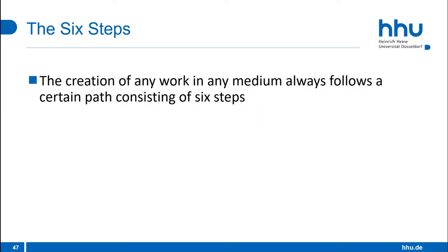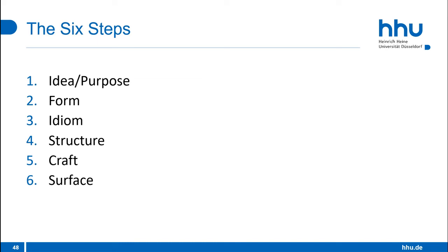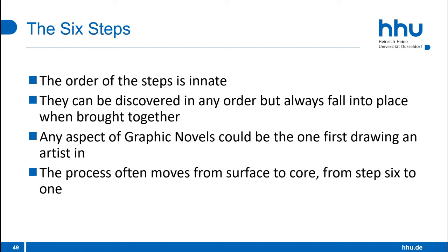The creation of any work in any medium always follows a certain path consisting of 6 steps. Step 1 is the idea or purpose — the work's content. Step 2 is the form the work will take, for example a book, a drawing or even a chair. Step 3 is the idiom — the genre the work belongs to and its vocabulary of styles, gestures or subject matter. Step 4 is the structure — what and how to put it together and arrange it, how to compose the work. Step 5 is the craft — constructing the work. And step 6 is the surface — the production values, finishing, the aspects most apparent on first superficial exposure. The order of these steps is innate; they can be discovered in any order but will always fall into place. Any aspect of graphic novels could be the one first drawing an artist in, but it's often a long, slow and steady process of learning from end to beginning — from surface to core, from step 6 to step 1.